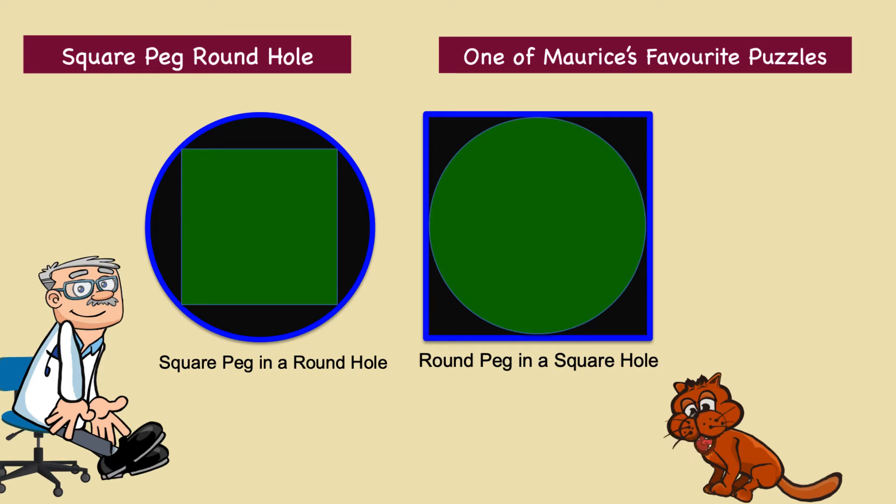Have you ever heard the phrase, square peg in a round hole? Well, this one asks the question, what is the tighter fit? A square peg in a round hole, or a round peg in a square hole?